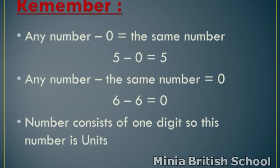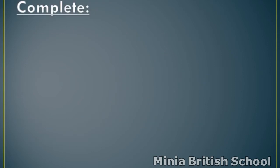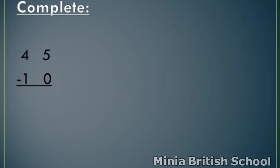And a number that consists of one digit — that number is units. For example, read this number: forty-five minus ten.